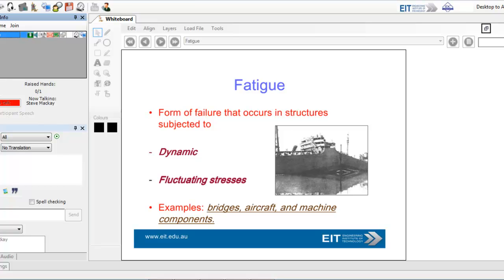Fatigue - failure occurs in structures subjected to dynamic and fluctuating stresses, such as bridges, aircraft, and machine components. You can think of fatigue as wear on a particular metal component, backwards and forth, and eventually it breaks.